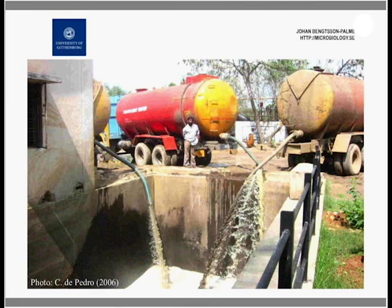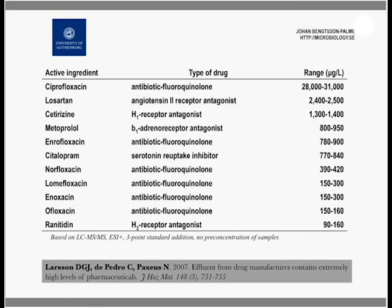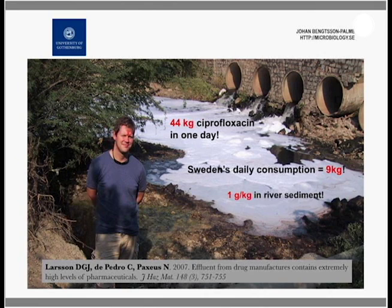When we did chemical analysis of this water, we found very high concentrations of many different pharmaceuticals in the effluent. One person who worked with these samples said it was as if you almost had an entire pharmacy in there. What I would like to highlight is the exceptional concentrations of ciprofloxacin — a broad-spectrum antibiotic. Concentrations of around 30 milligrams per liter were found in the effluent, which is actually higher than the concentration found in a patient's blood when being treated with this drug. That means from one pipe at this wastewater treatment plant, 44 kilograms of ciprofloxacin were released in a single day.